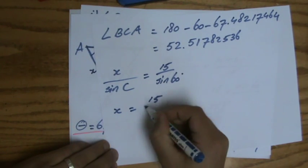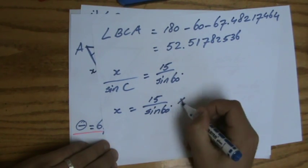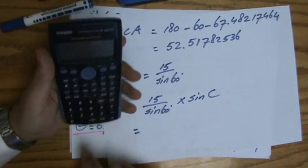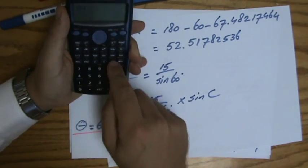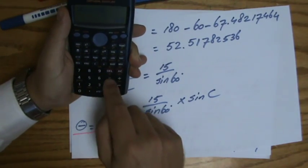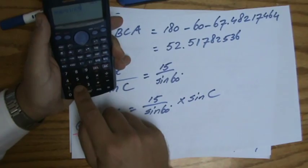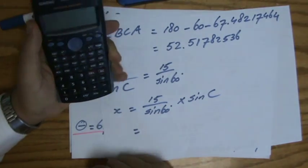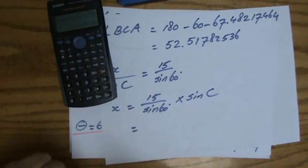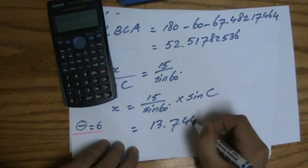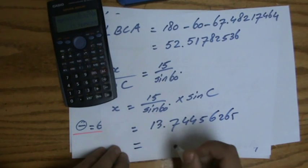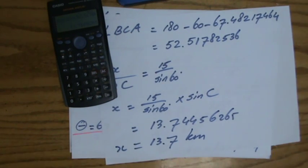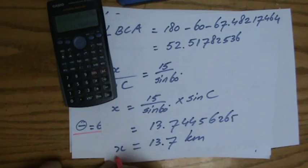So x equals 15 divided by the sine of 16 times the sine of angle C. And I'm going to grab my calculator now, and I'm going to put in that 15 divided by the sine of 16 equals, and I'm going to times that by the sine of 52.51782536 equals, and it's going to give me the answer of 13.74456265. And that to three significant figures, 13.7. And we are talking about kilometers. So that would be the answer for that question.